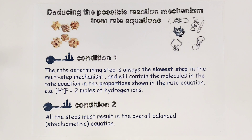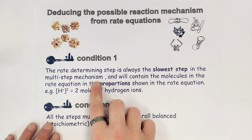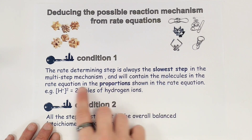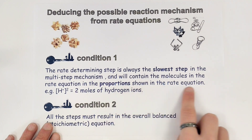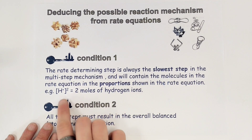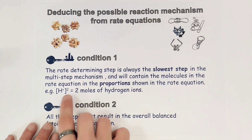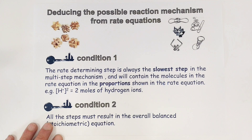Now there are two conditions that must be met to successfully achieve this. The first is that the rate determining step, or the slowest step in your multi-step mechanism, must contain the molecules shown in the rate equation in the proportions shown by that rate equation — i.e. if hydrogen ions were second order in the rate equation, there would need to be two moles of hydrogen ions present in the rate determining step.